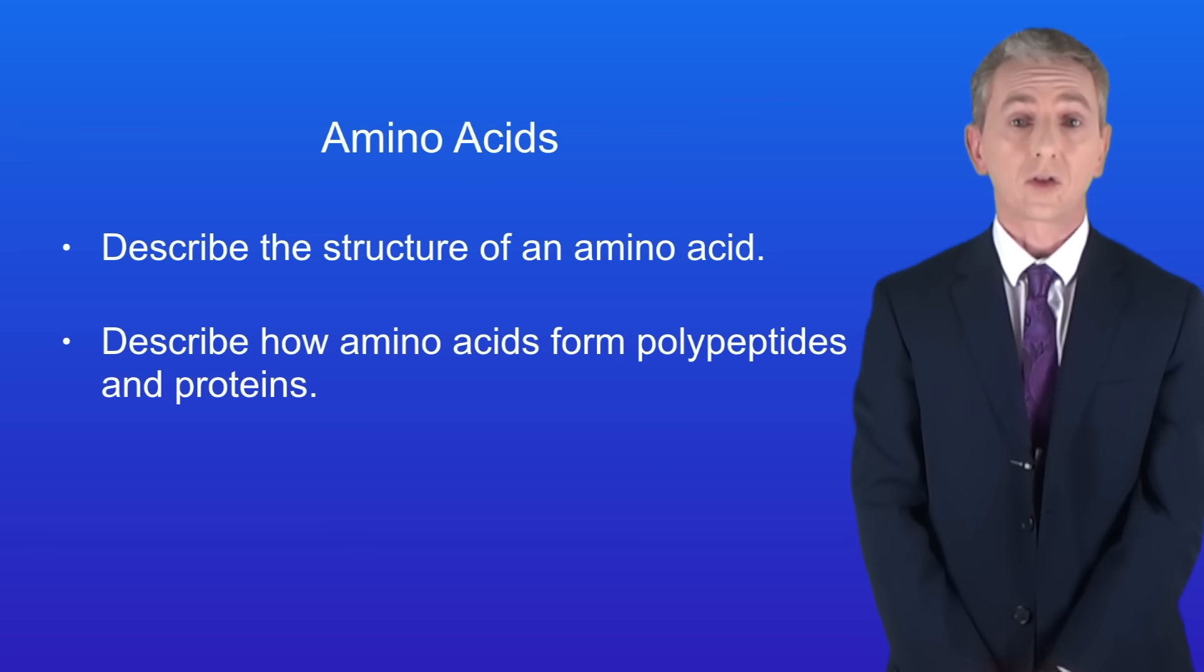In the last video we looked at condensation polymers. We saw that these are formed when we react two different monomers. The example we looked at was a polyester. In this video we're looking at how a condensation polymer can be formed from molecules called amino acids.